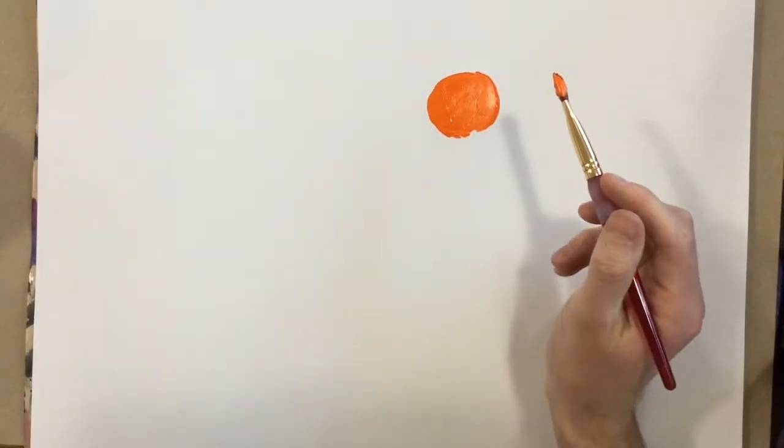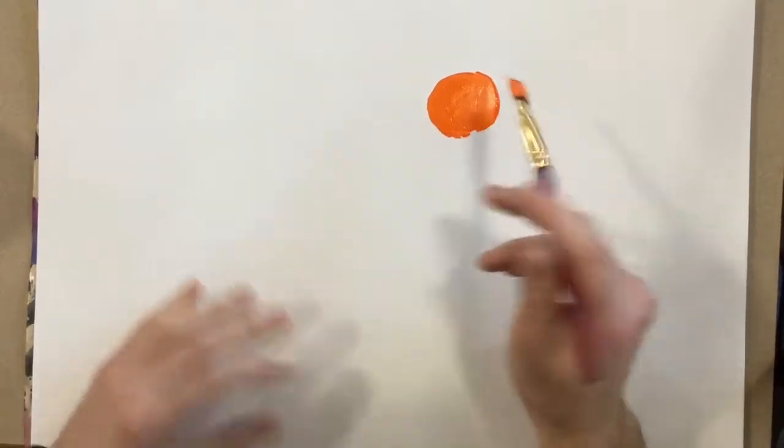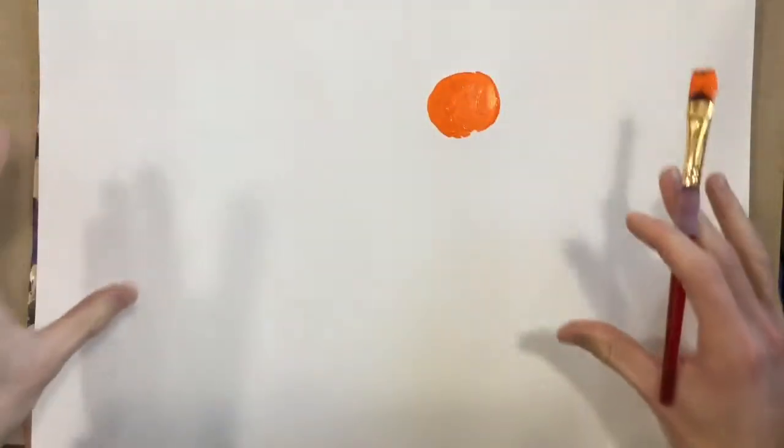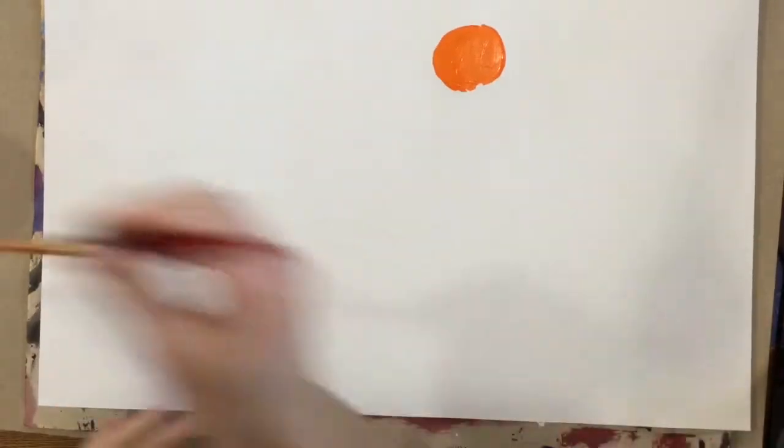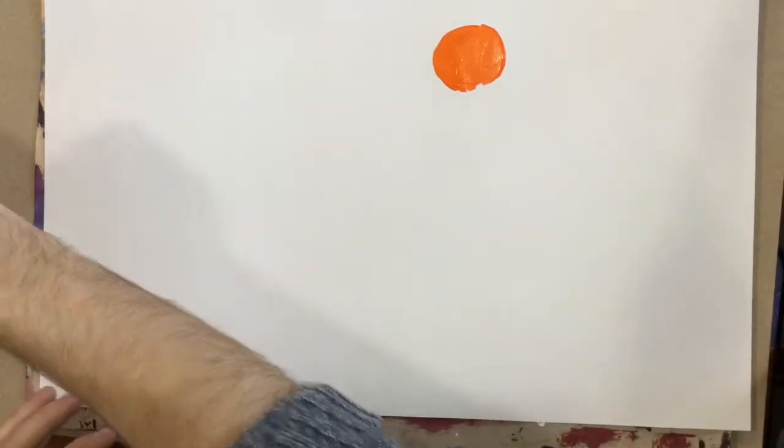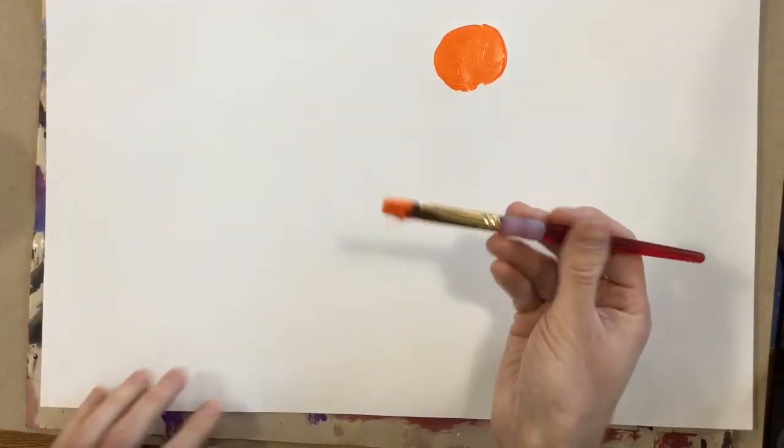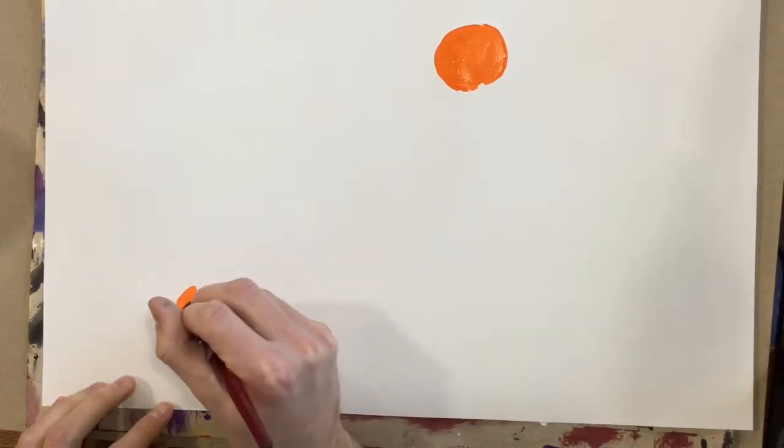You can either start with one circle and just have it kind of radiate out or go out to the edges, or you could do a couple different ones. I think I'm actually going to do a couple different ones. Obviously, I don't just have to stick with orange. I could do my other circle in a different color.